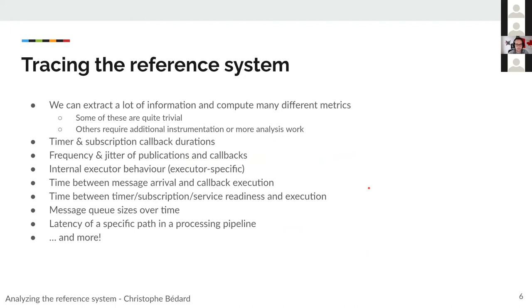There's a lot we can do currently, but there's even more we could do with more work. We can currently get information about callback durations for timers and subscriptions, and compute frequency and jitter for those and for publications. You can also get information about the internal behavior of an executor, which is of course executor-specific — this would be useful for all the executors people are going to mention later on, but it's not implemented for all of them currently.